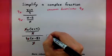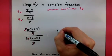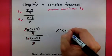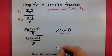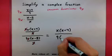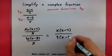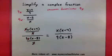So, if we write what's left over, x times x plus 4, the only thing left up top, and the only thing left in the bottom, 9 times x minus 8, this will simplify our complex fraction.